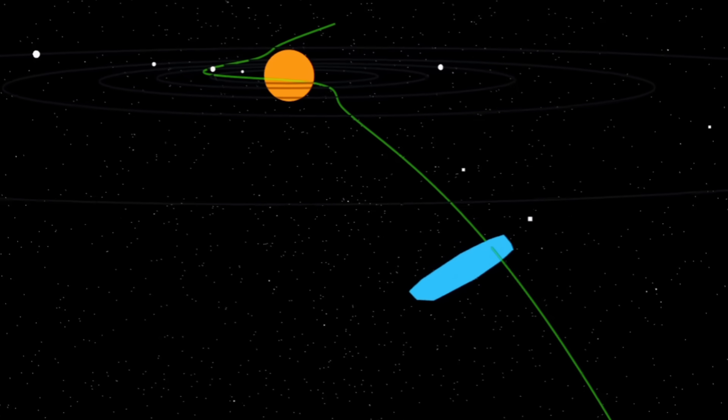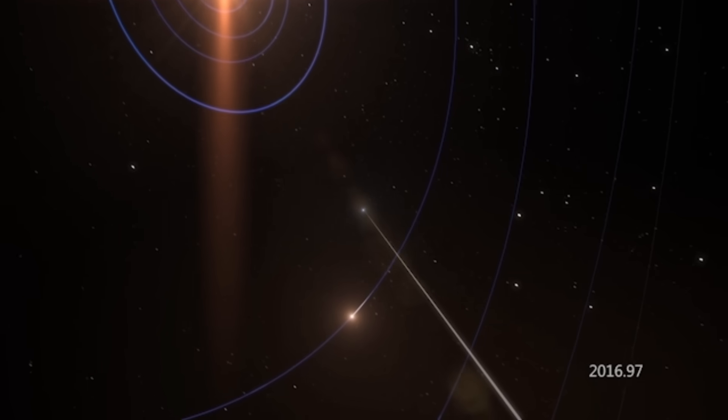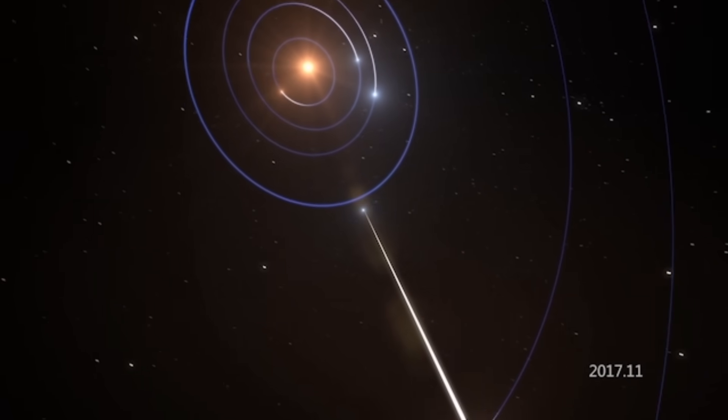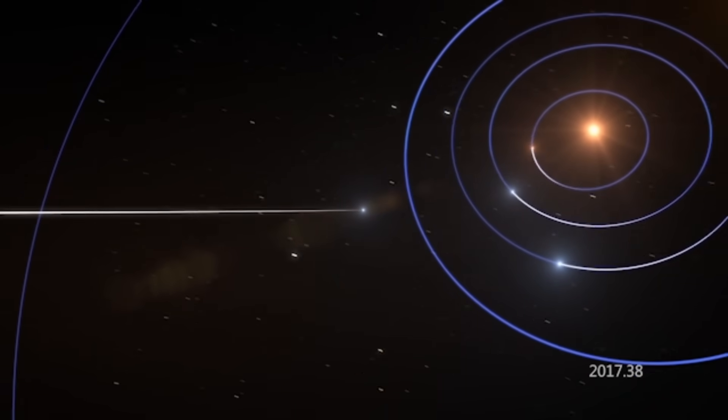Follow-up observations on July 1st and 2nd showed that this object wasn't following a typical path. In fact, it might even be interstellar, meaning it could be coming from outside our solar system.